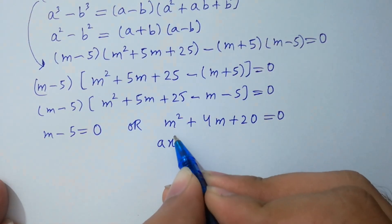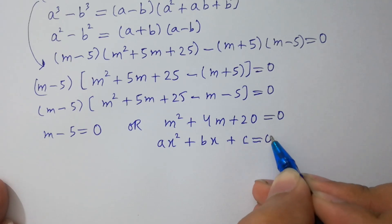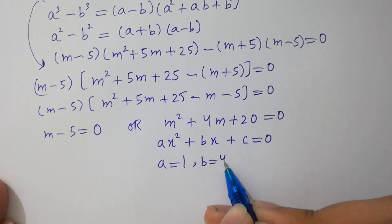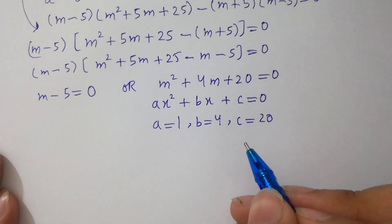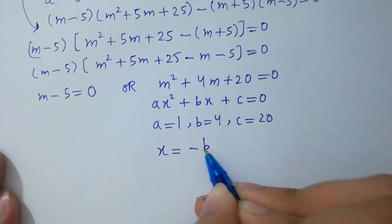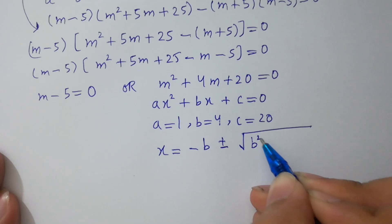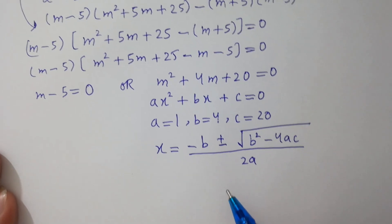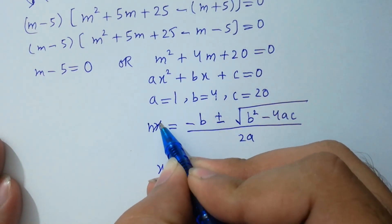For the quadratic ax squared plus bx plus c equals zero, we have a equals 1, b equals 4, c equals 20. Applying the quadratic formula: x equals minus b plus or minus square root of (b squared minus 4ac) over 2a. Substituting the M values now.